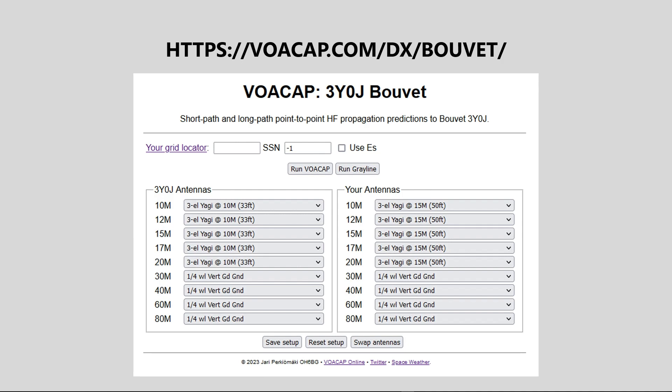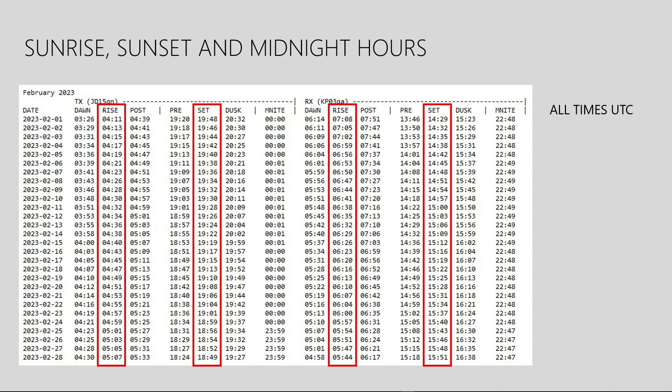The site also offers detailed calculations for sunrise and sunset times for the month of February for Bouvet and your location. Click on the button labeled Run Grayline next to the Run VOACAP button. These times will help you determine the best times for low band contacts. As you can see, there are considerable changes in sunrise and sunset times within one month. All times are UTC.